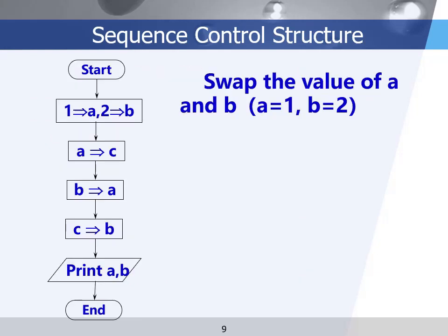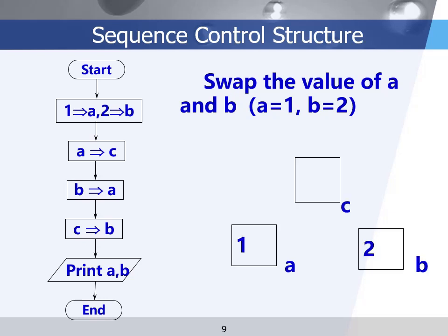Here's another sequential algorithm that swaps the values of two variables a and b. First, a equals 1 and b equals 2. Then we assign a to c, assign b to a, and assign c to b. Then we print out a and b. To test this, we simulate: initially a=1, b=2; first step, c equals 1; then a equals 2; then b equals 1. So a equals 2 and b equals 1 — the swap is complete.